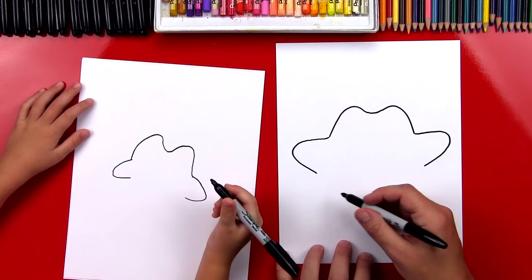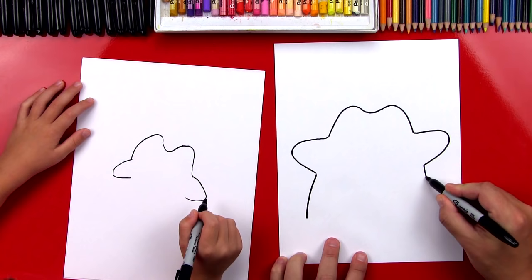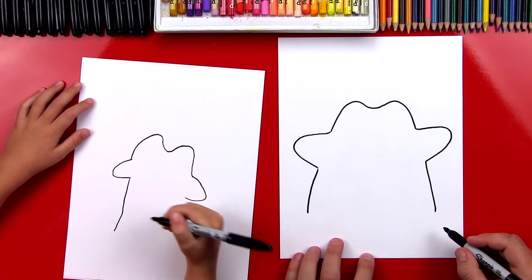Now we're gonna draw his body. So let's draw a line that comes down. And down on this side also. And then one on the other side. I like your Ditto. He's gonna be tall. Cool.